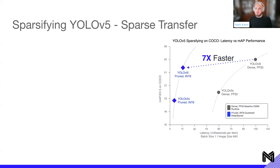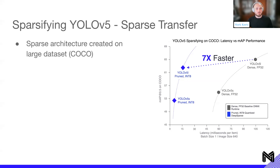Now that we have the background, let's dive into how we actually apply this. Looking at sparse transfer: first, we want to create a sparse architecture on a large dataset. For us, we're generally creating them on the COCO dataset — we train and prune on that upstream dataset.